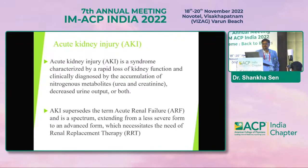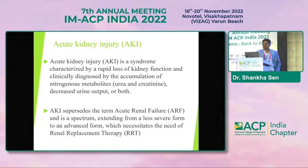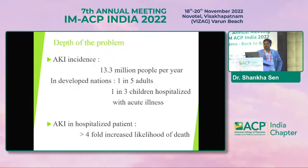AKI is clinically diagnosed by the accumulation of nitrogenous metabolites and with decrease in urine output or both. AKI supersedes the term previously used — acute renal failure — and is a spectrum extending from a less severe form to an advanced form which necessitates renal replacement therapy. The incidence is quite high, and AKI in hospitalized patients is associated with more than four-fold increased likelihood for death.